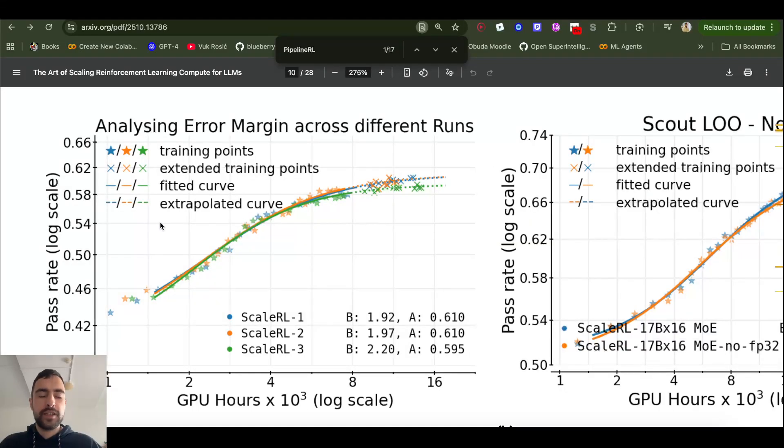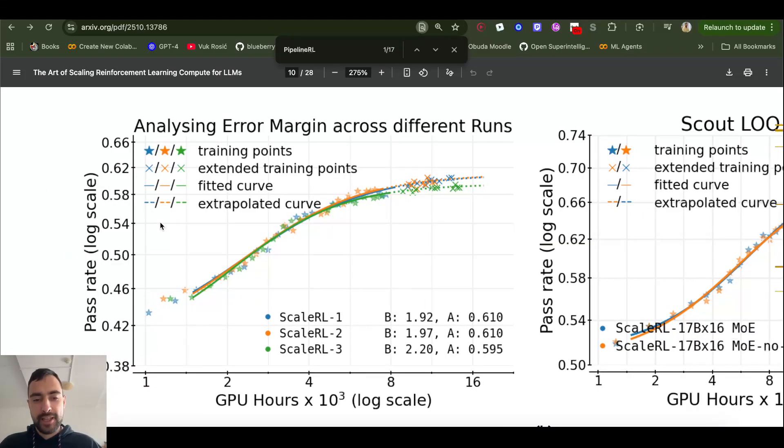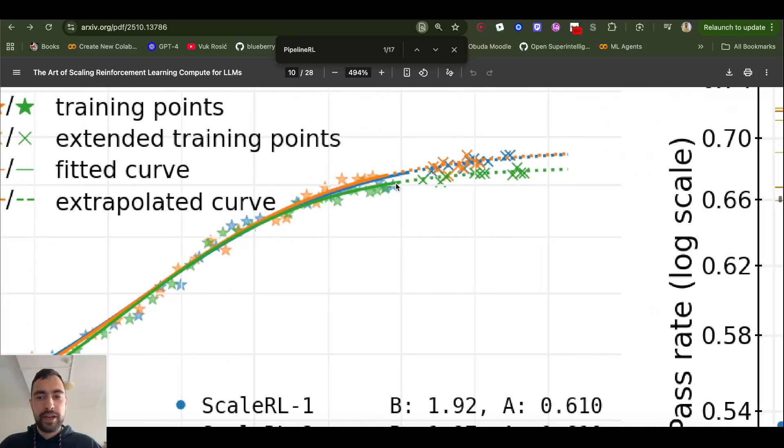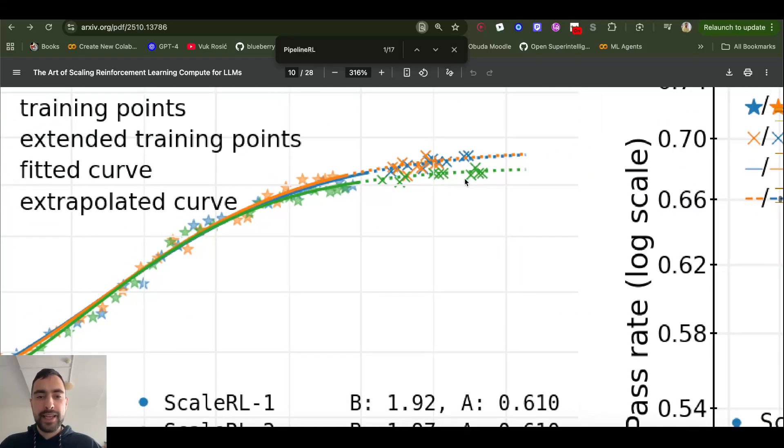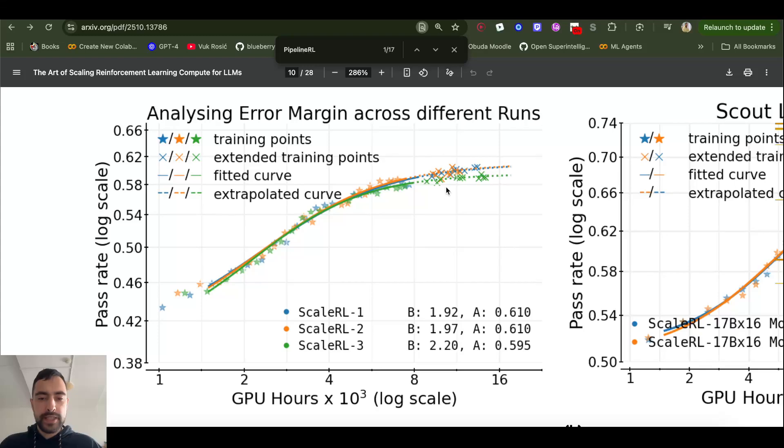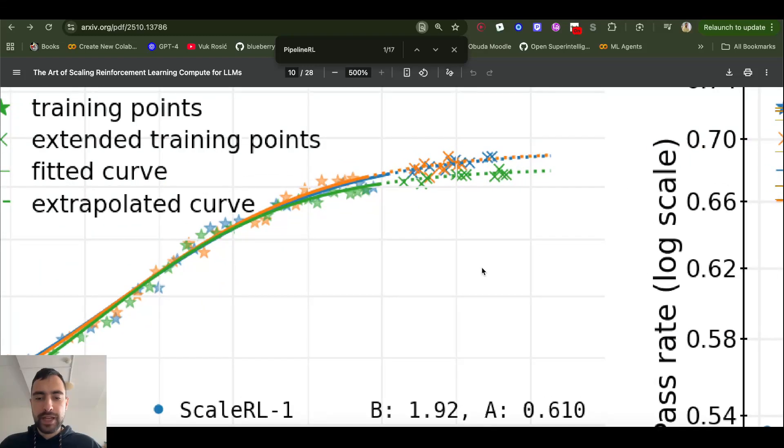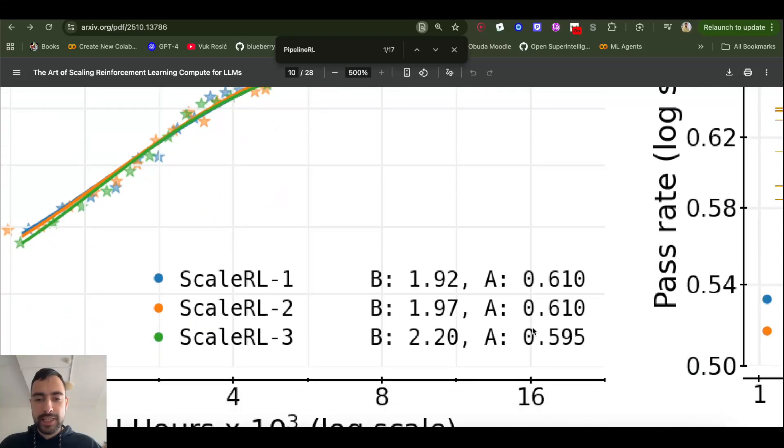And then reinforcement learning is a bit random in itself and large language models. So they tried and trained exact same thing, their recipe ScaleRL three times. And you see, every time is actually going to have a bit different ceiling and a bit different, but these two times here look exactly the same, these two. And then this one is a bit different.